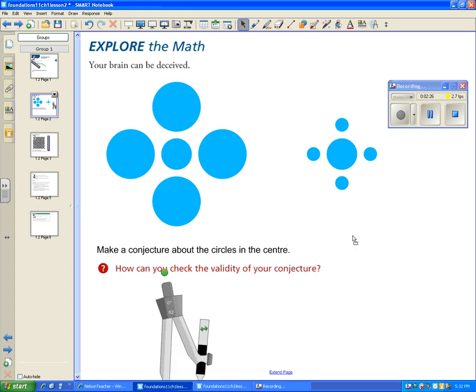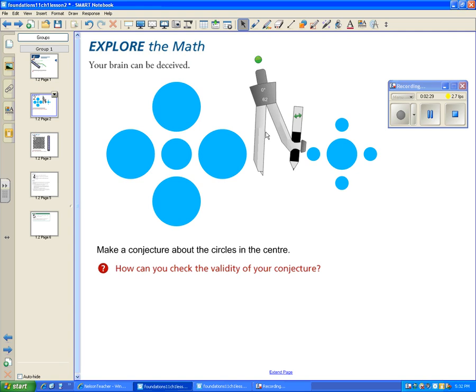So the way we check that is, in this case, we used a compass to show that they had the same radius.